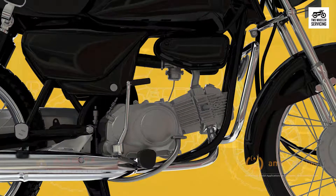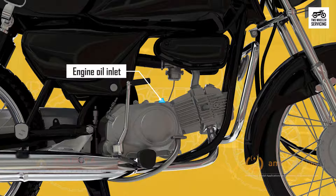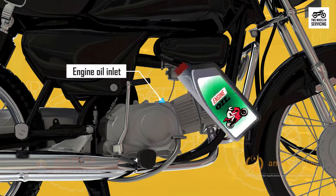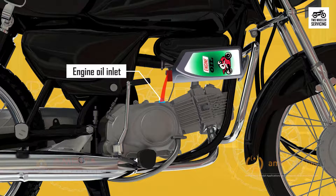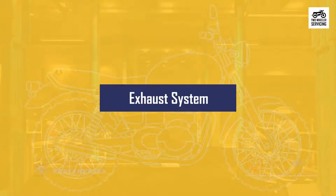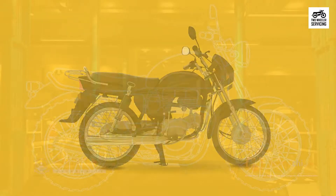Next is the lubrication system. The engine contains many moving parts, and engine oil is required to protect and ensure proper functioning of its vital components, helping to avoid wear and tear. The engine oil is poured through the engine oil inlet.